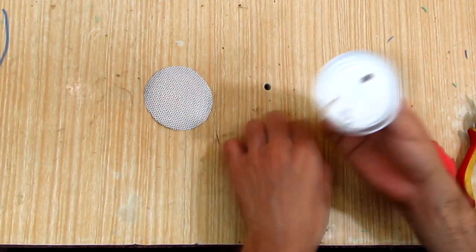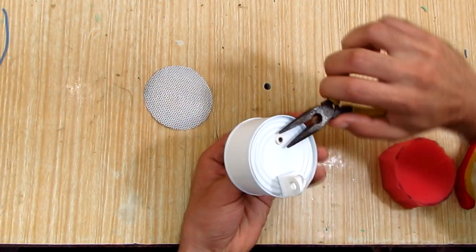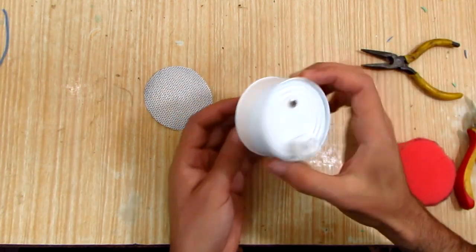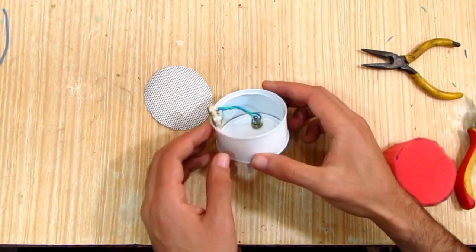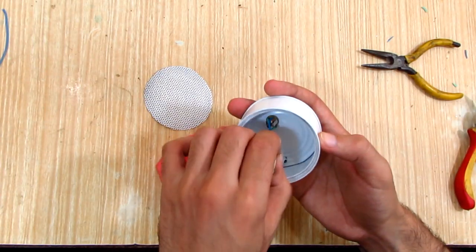I screwed in the female jack then tightened it with pliers. I inserted the sponge and adjusted the microphones to sit on top of it.